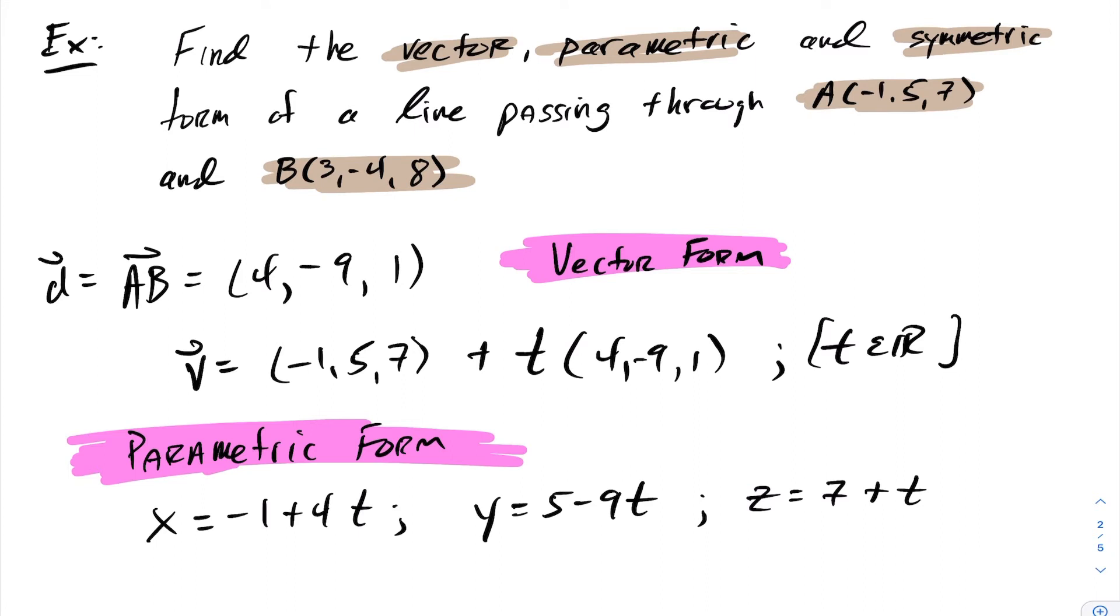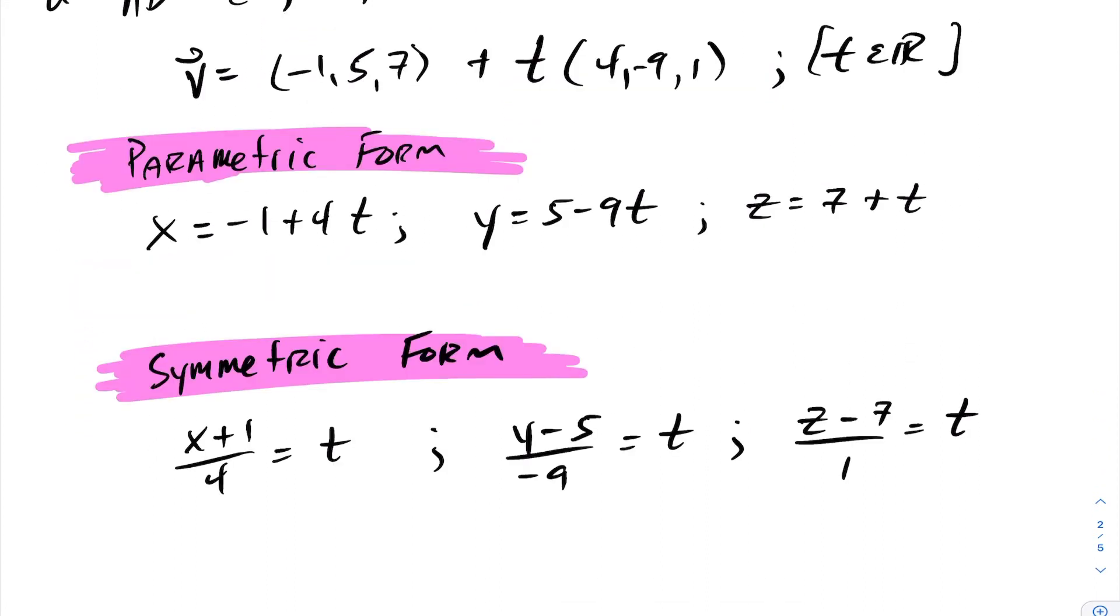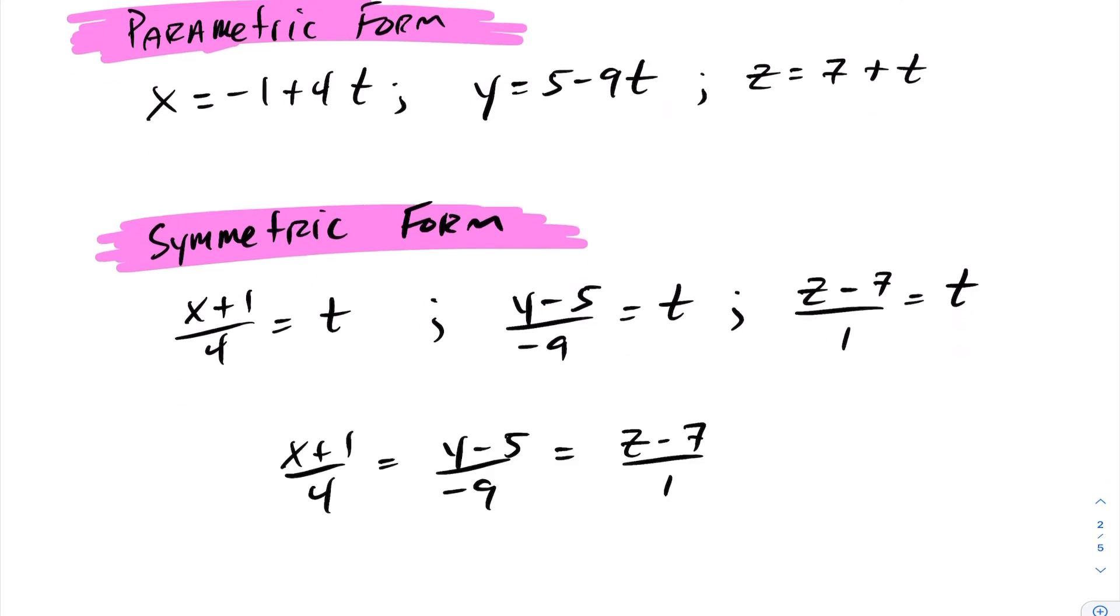Now let's take a look at symmetric form. Notice here for symmetric form I've isolated for t for all three equations, and therefore equating these we now have our symmetric form. Let's take a look at another example.